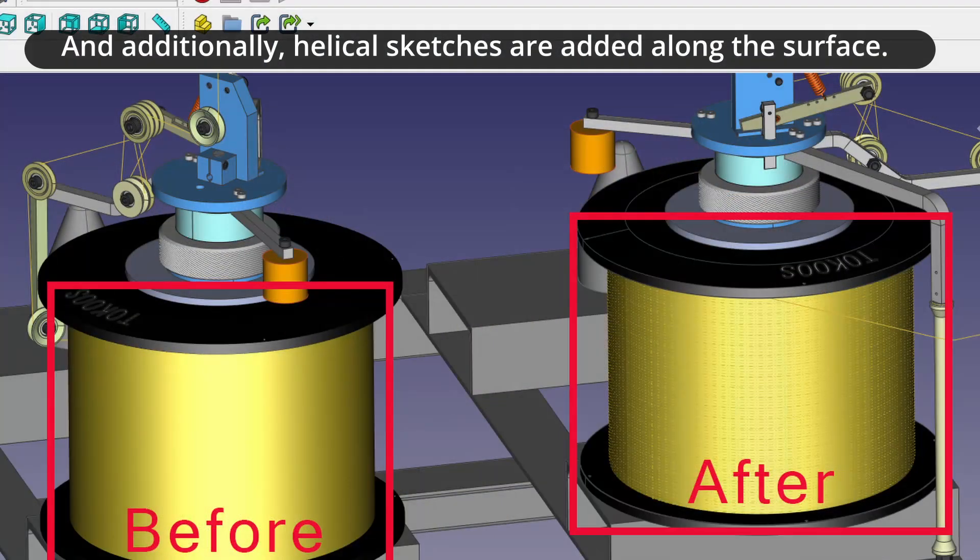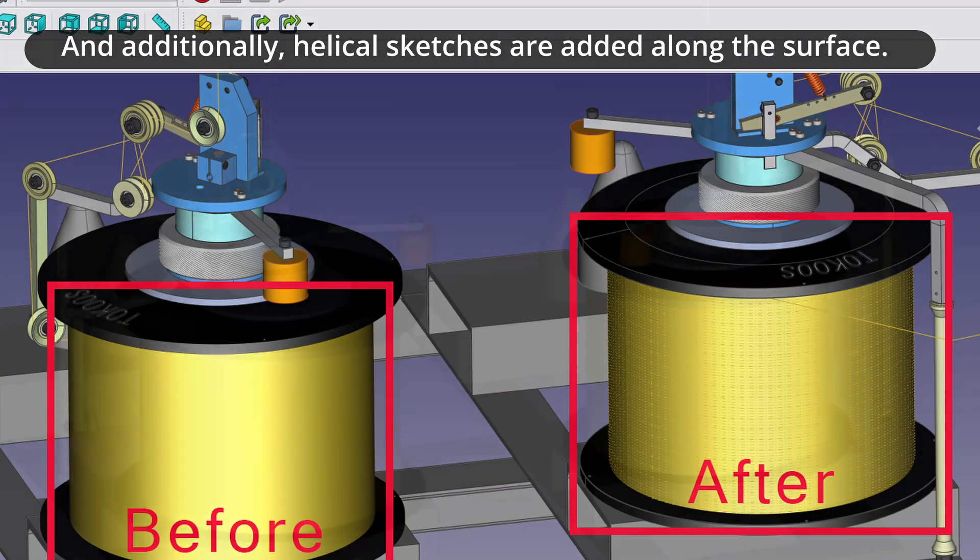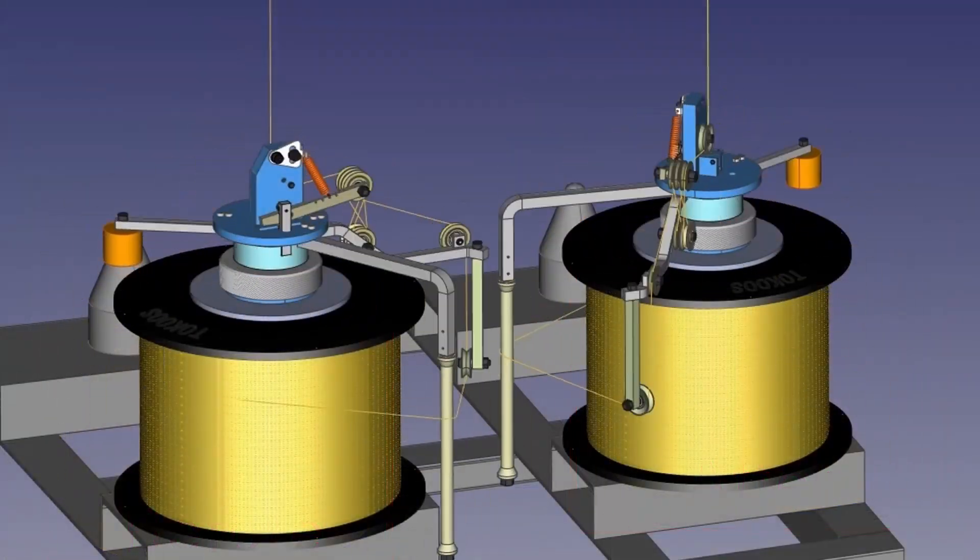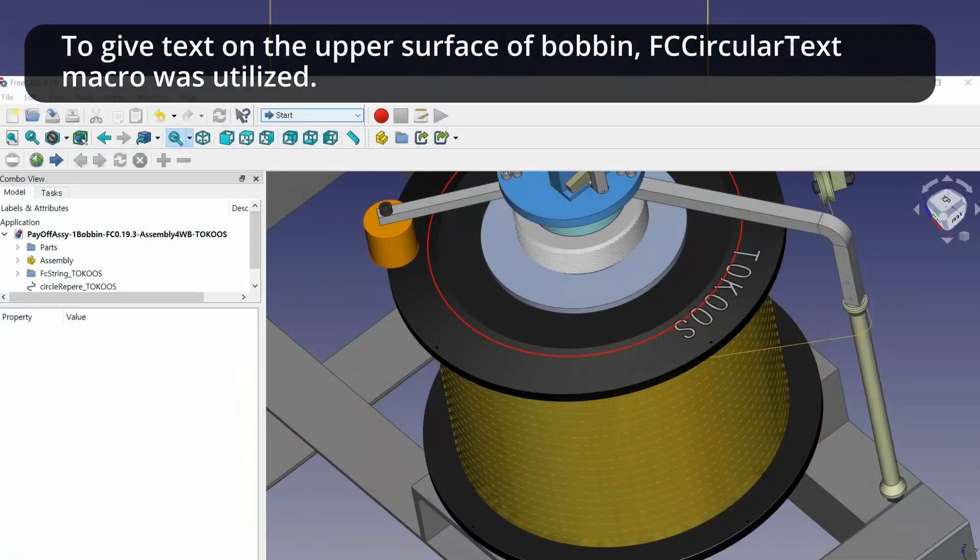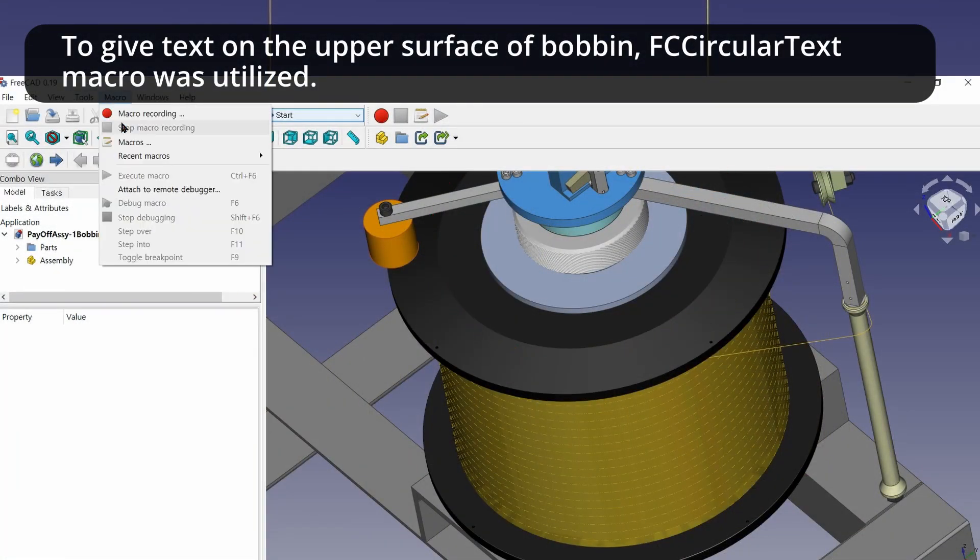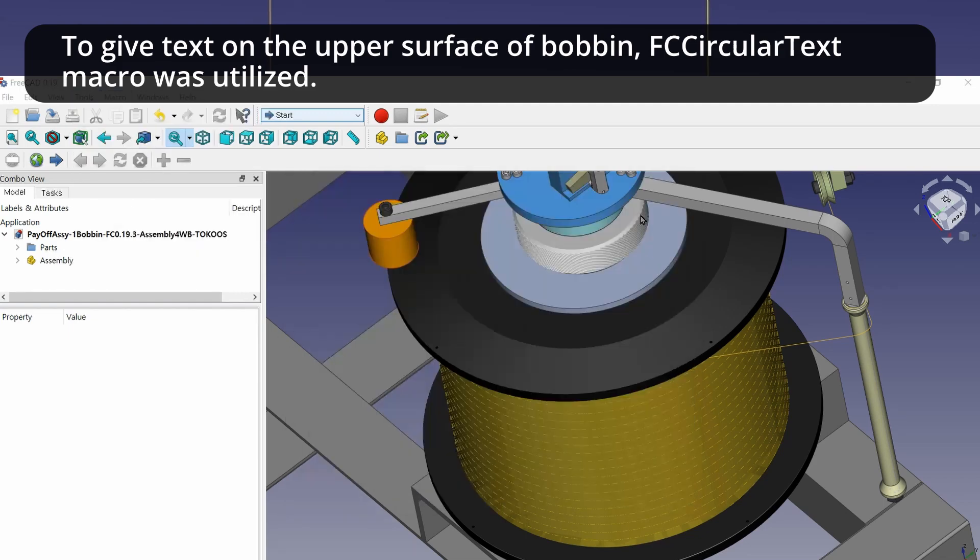And additionally, helical sketches are added along the surface. To give text on the upper surface of bobbin, FC Circular Text Macro was utilized.